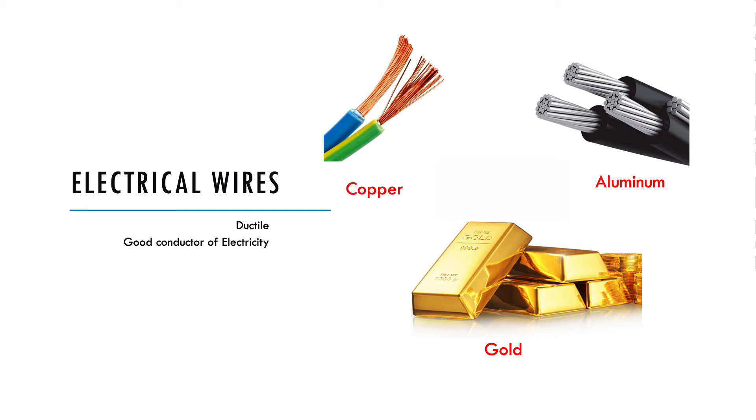Copper, aluminum and gold are used to make electrical wires because they are easily converted into wire due to their ductility and also they are good conductor of electricity.